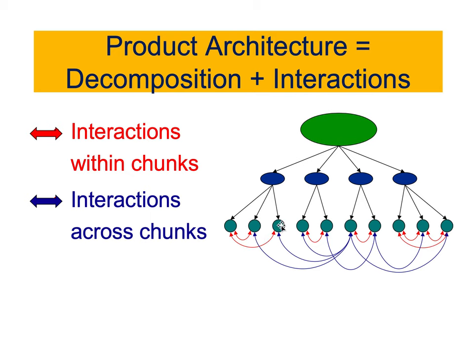Interaction across chunks — shown with blue arrows — is when components in one chunk communicate with components in another chunk. When designing your system, chunks, and components, you need to be aware of this reality. These decomposition and interaction diagrams will help you understand which part talks to which part, and which chunk talks to which chunk. You will be asked to develop something like this for your product in the weekly activity. Thank you for watching — until next time, bye!